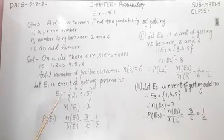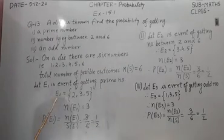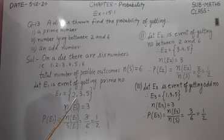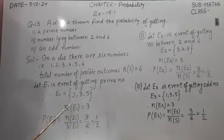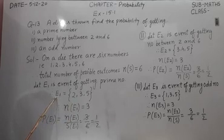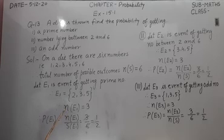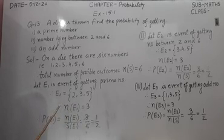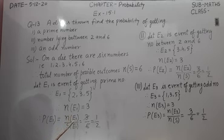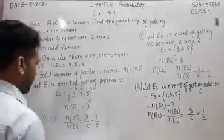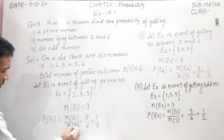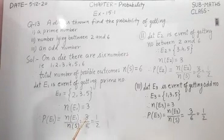Let us suppose E1 is an event of getting a prime number. The elements of event E1 are 2, 3, and 5, because among these six numbers only these three are prime numbers. So favorable cases of event E1 are 3, and we write n(E1) equal to 3. The probability of event E1, that is getting a prime number, is the favorable number of outcomes divided by the total number of possible outcomes n(S).